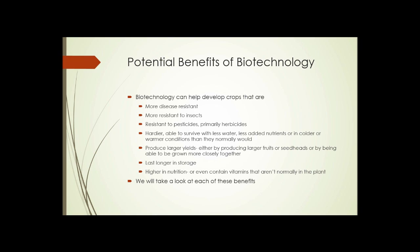Why do we do this at all? There are potential benefits of biotechnology. Biotechnology can help develop crops that are more disease resistant, more resistant to insects, resistant to pesticides — primarily herbicides — are hardier, able to survive with less water, fewer added nutrients, or in colder or warmer conditions than they normally would. It can produce larger yields, either by producing larger fruits or seed heads, or being able to be grown more closely together. And it can create crops that last longer in storage, or are higher in nutrition, or even contain vitamins that aren't normally available in that plant.